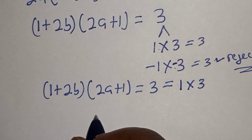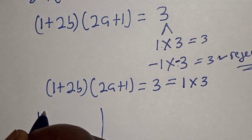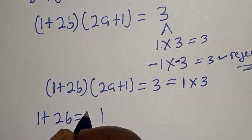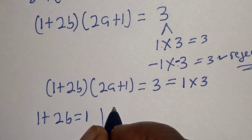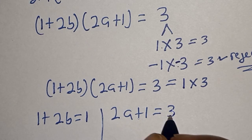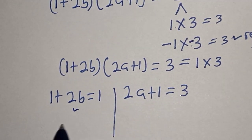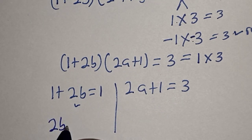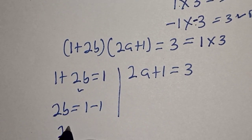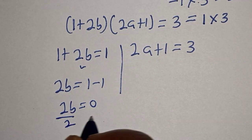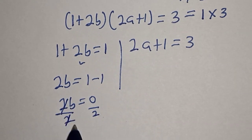Since a and b are members of the positive integers, 3 equals 1 multiplied by 3. The case of negative factors, such as minus 1 times minus 3, is rejected. Therefore there are 2 cases: 1 plus 2b is equal to 1, or 2a plus 1 is equal to 3.